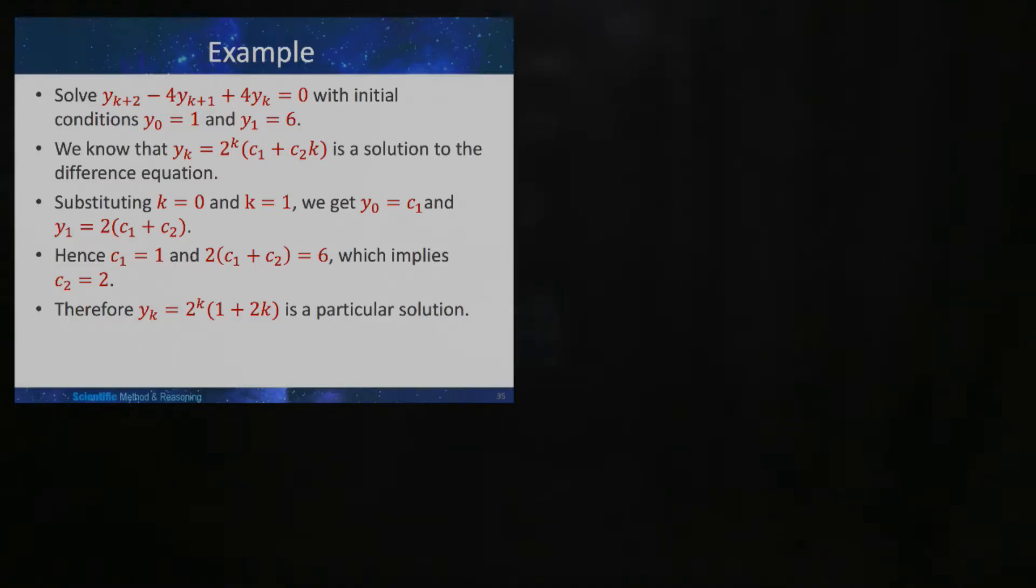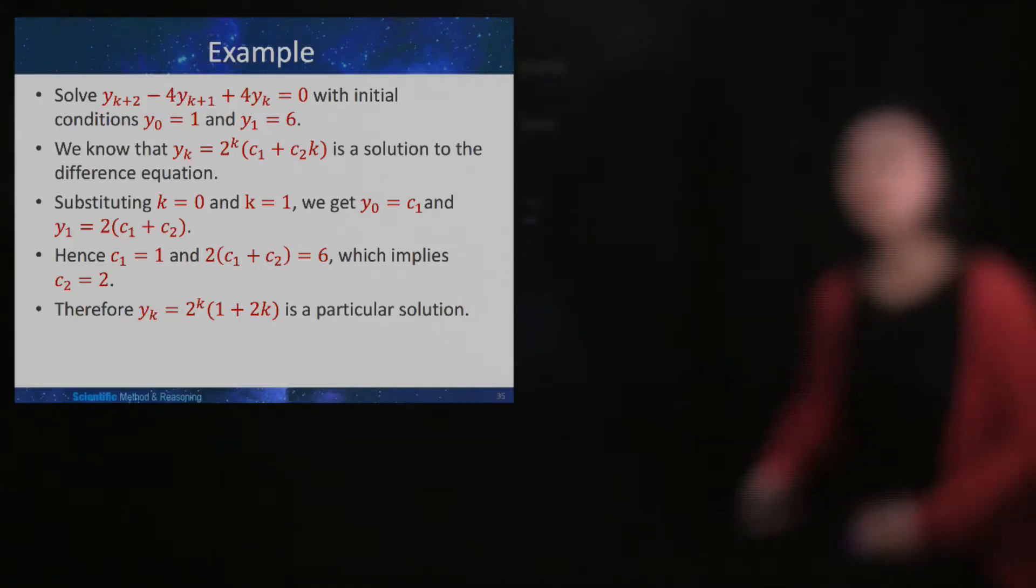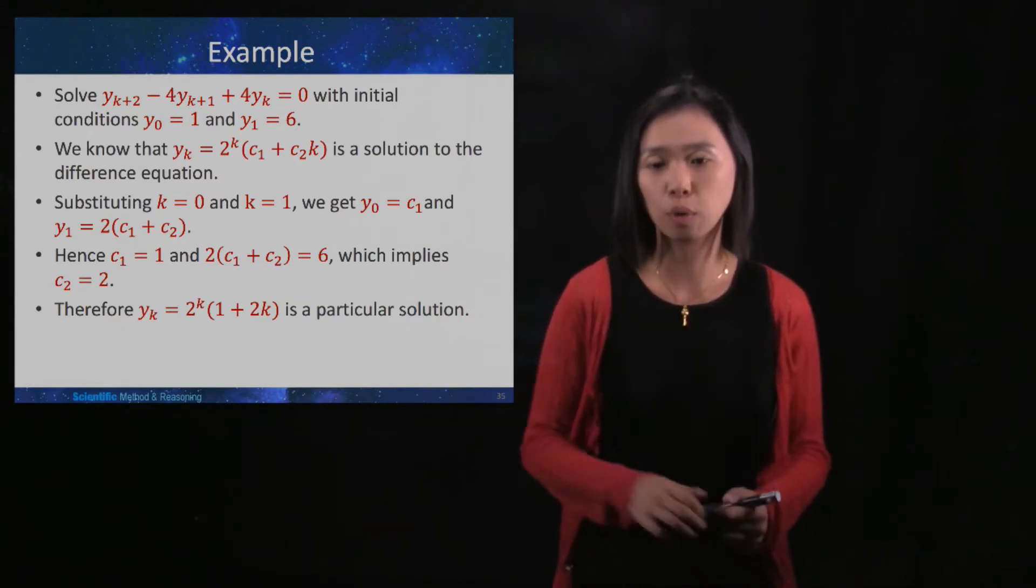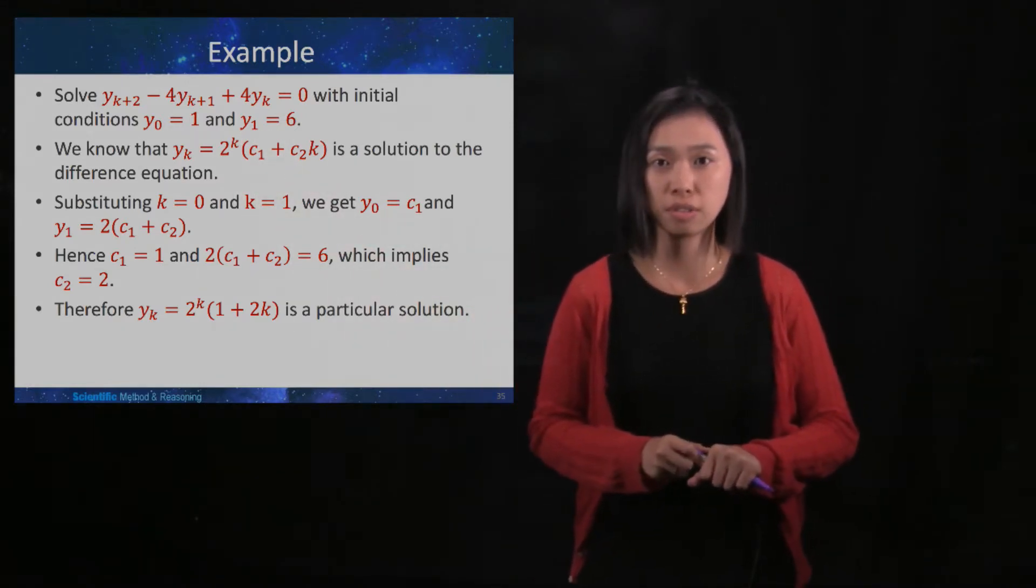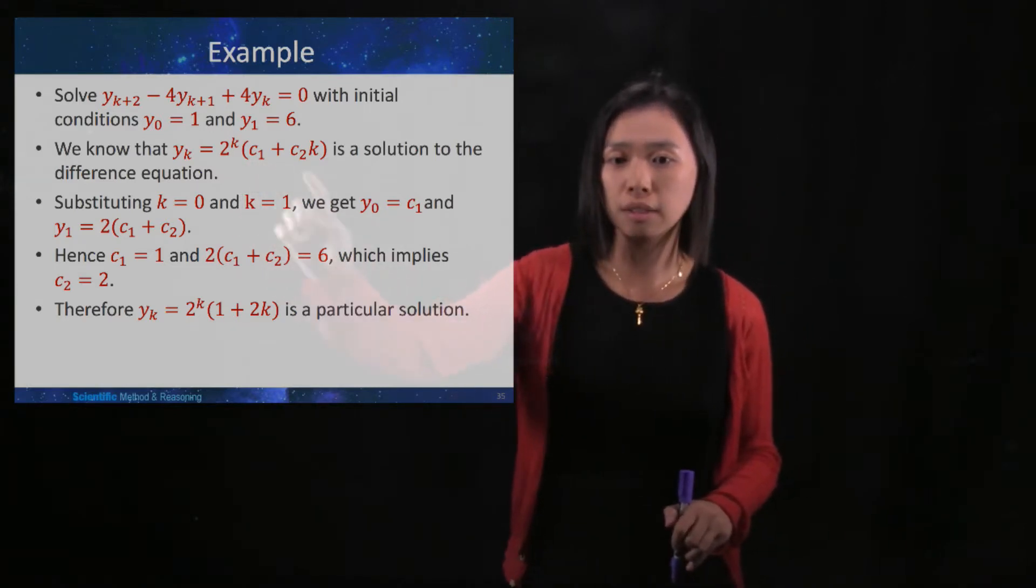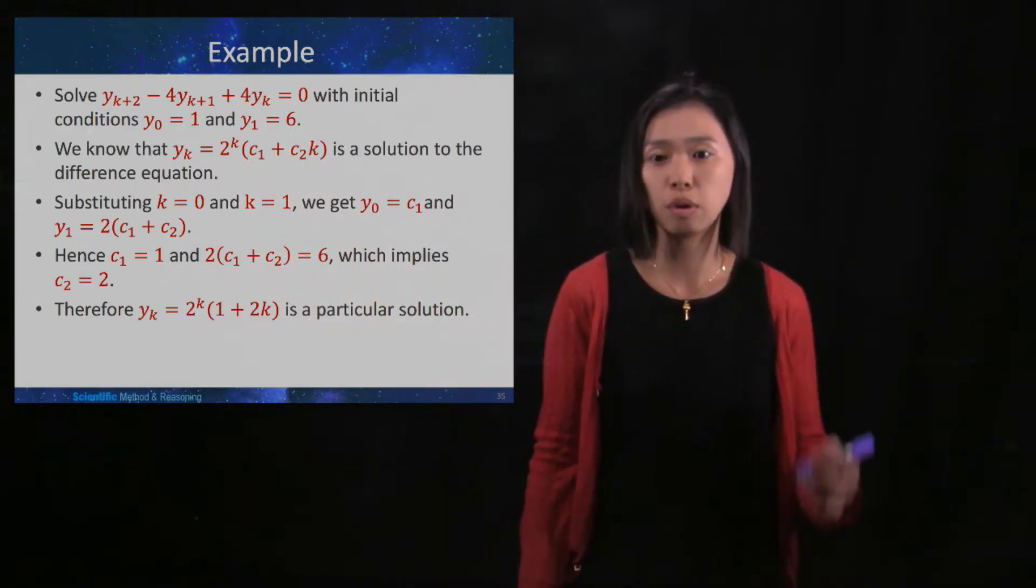Solve y_{k+2} - 4y_{k+1} + 4y_k = 0 with these two initial conditions. This is the same difference equation as in the previous video, and we know that this is the solution to this difference equation.